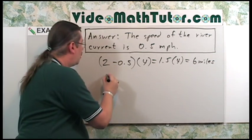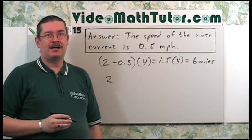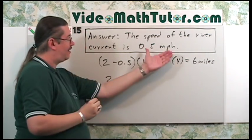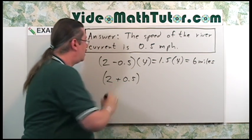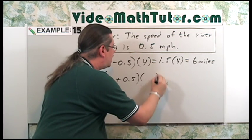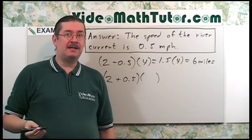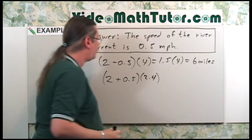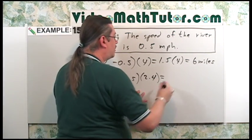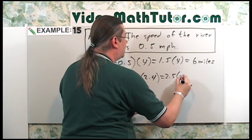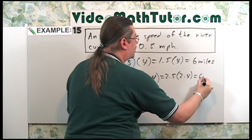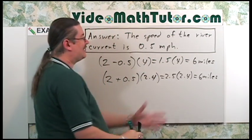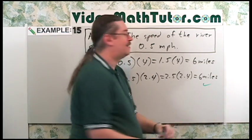Now let's do downstream. He normally travels 2 miles per hour. Going downstream, the river pushes him, so he goes a little bit faster. So you're going to add 0.5 times the time of travel, which is 144 minutes, but we converted that to 2.4 hours. Let's simplify this. This is going to be 2.5 times 2.4. And yep, sure enough, it's also 6 miles. So it's the same distance traveled. So that checks, and we're done.